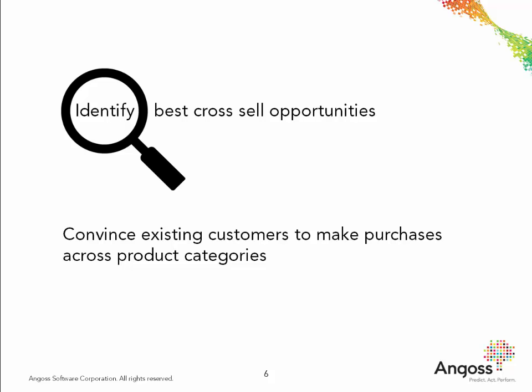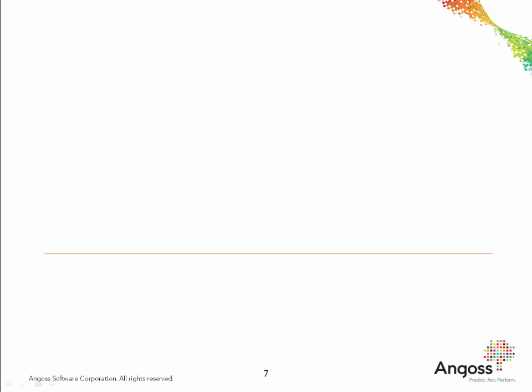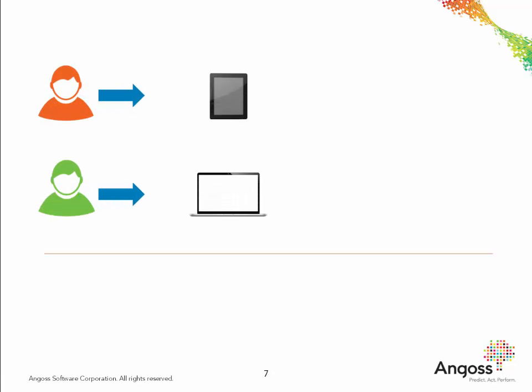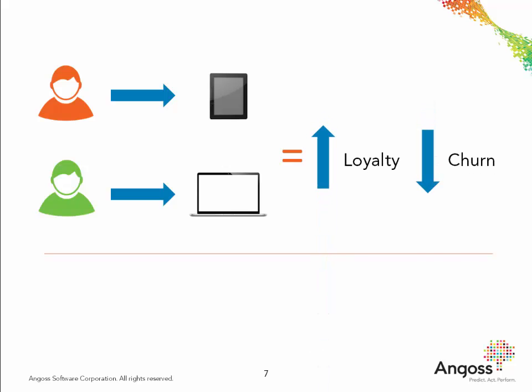Cross-sell and up-sell models help businesses identify the best cross-sell opportunities and convince existing customers to make more purchases across a broader set of product categories. These models help to target customers with the right products, leading to more engaged and loyal customers while reducing customer churn, resulting in increased revenue.